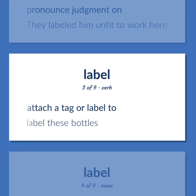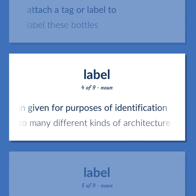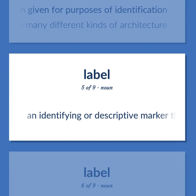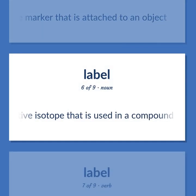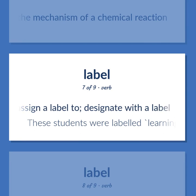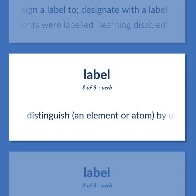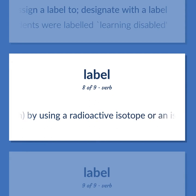Label: attach a tag or label to — 'Label these bottles.' A brief description given for purposes of identification — 'The label modern is applied to many different kinds of architecture.' An identifying or descriptive marker that is attached to an object. A radioactive isotope used in a compound to trace the mechanism of a chemical reaction. Assign a label to; designate with a label — 'These students were labeled learning disabled.' Distinguish an element or atom by using a radioactive isotope or an isotope of unusual mass for tracing through chemical reactions.